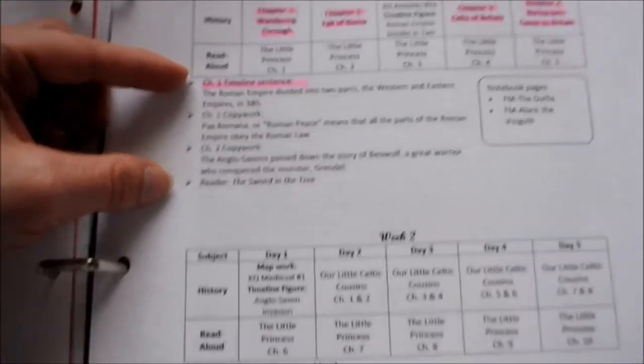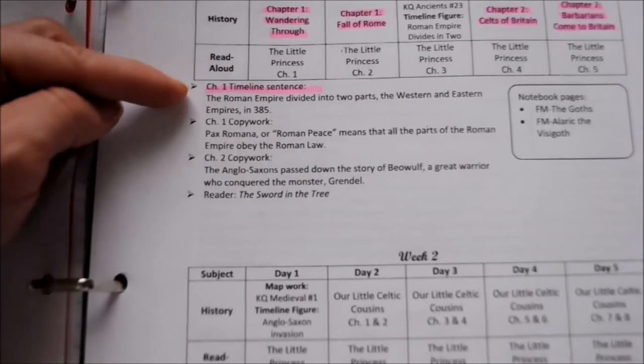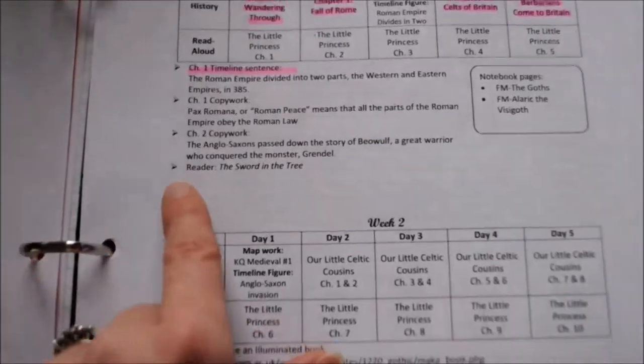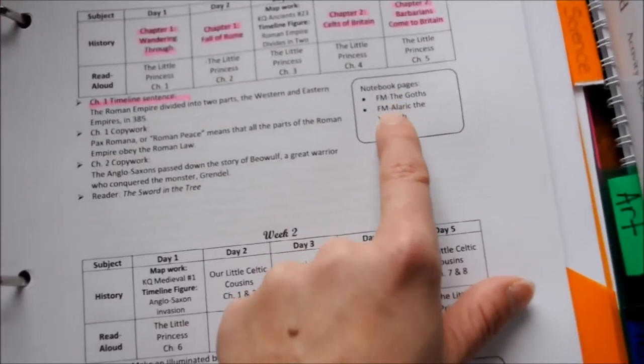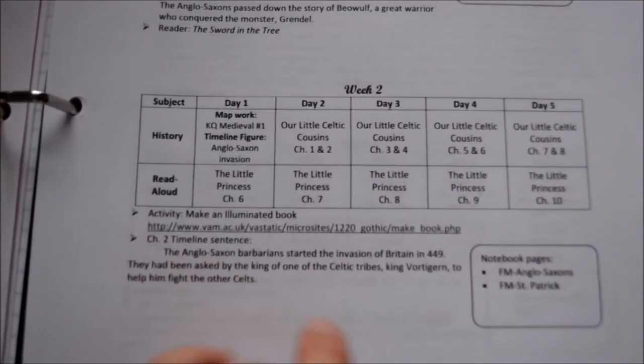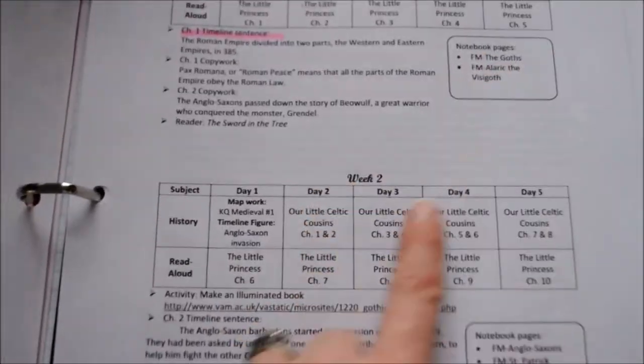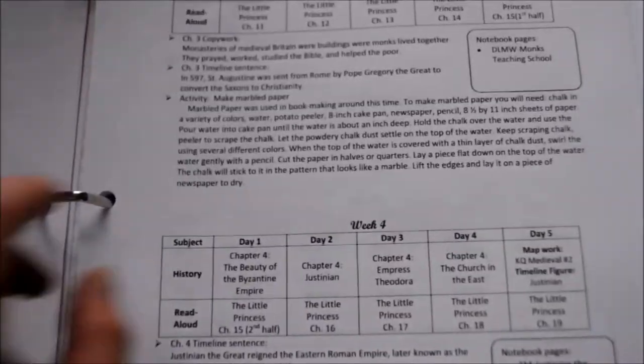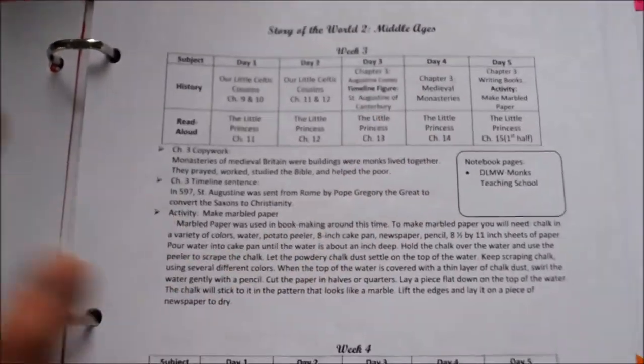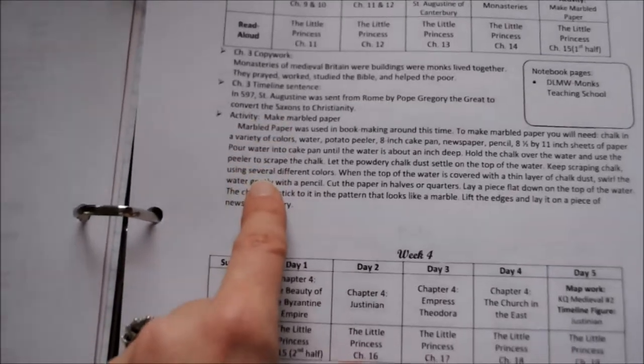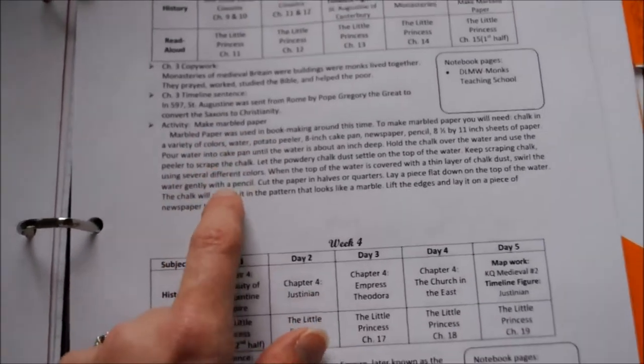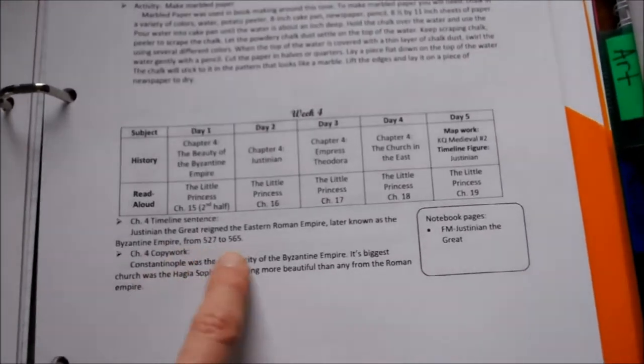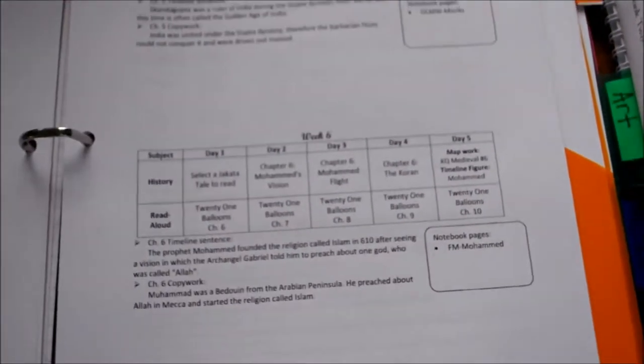And over here, I don't know if you'll ever see this, I don't know if my camera will, is the chapter one timeline sentence that we write in our timeline journal. Chapter one copy work, chapter two copy work, and she has the readers, The Sword in the Tree, and the notebook pages that she has used for this. And then same thing with chapter two. And after chapter two in Story of the World, she starts reading Our Little Celtic Cousins and does that for about a week and a half before she jumps back over to Story of the World, which I like. I like going back and forth. And she also has some activities, so this week we'll make marbled paper, and that seems really easy, and we can do that. And I like that she has the timeline sentence that they can add to their journal, without me having to fumble and trying to figure out what they're going to write.